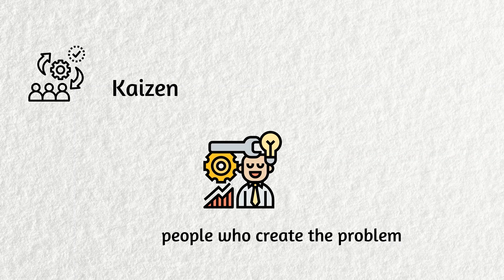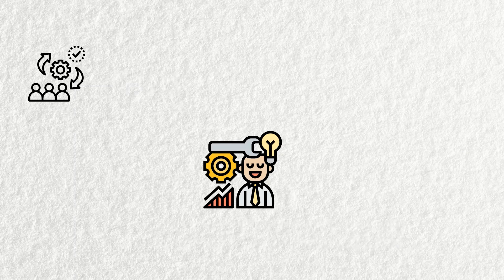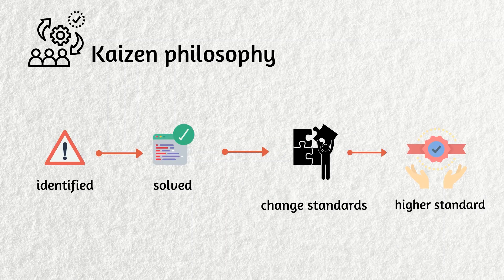The real issue is that the people who create the problem are often not those who are directly inconvenienced by it. According to Kaizen philosophy, when a problem is identified, that problem must be solved. Once a problem is solved, that typically results in the need to change standards, which then replaces a previously set standard. A new standard is then established.